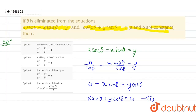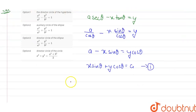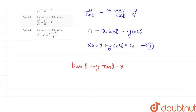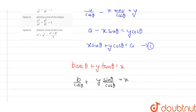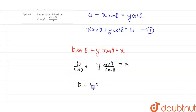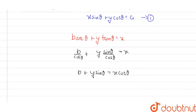The other equation given is b sec θ plus y tan θ equals x. Writing it as b/cos θ plus y sin θ/cos θ equals x, and multiplying both sides by cos θ, this becomes b plus y sin θ equals x cos θ. Rearranging, we get x cos θ minus y sin θ = b. This is equation number two.